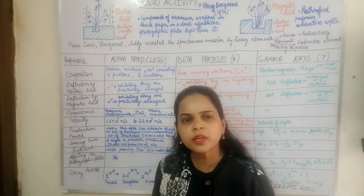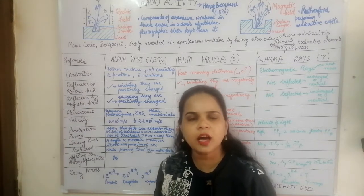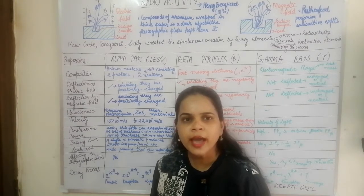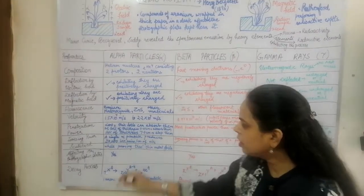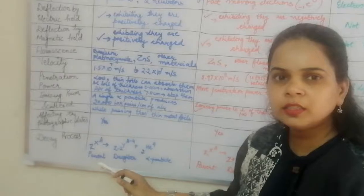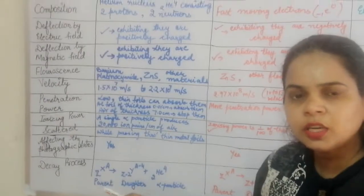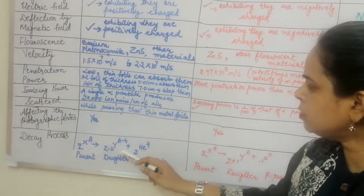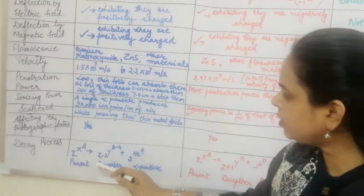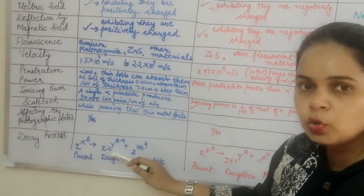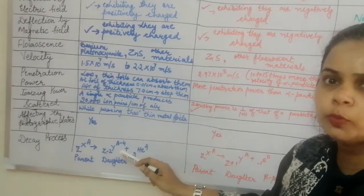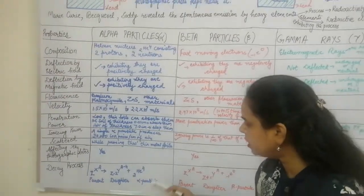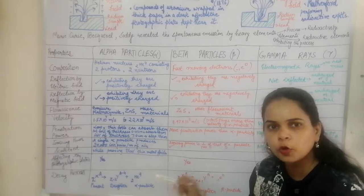In alpha emission, the parent nucleus undergoes disintegration forming a daughter nucleus with the atomic number reduced by 2 and the mass number reduced by 4. It produces a helium particle, 2He4.